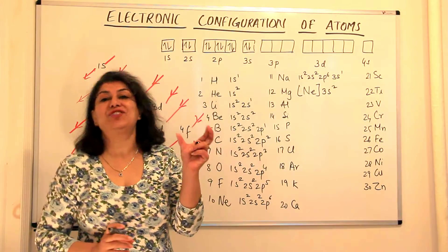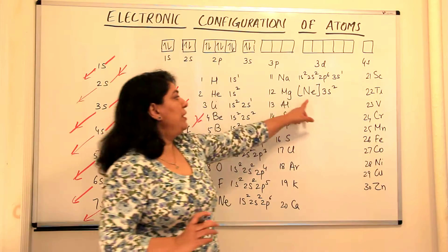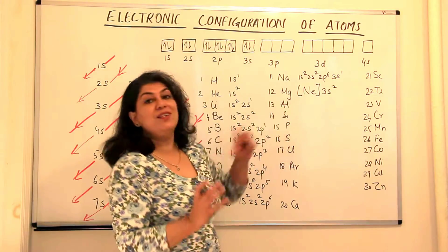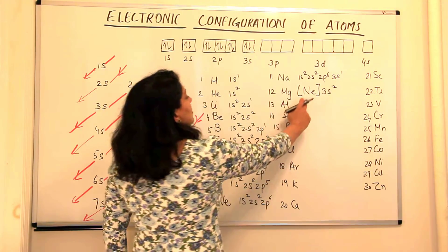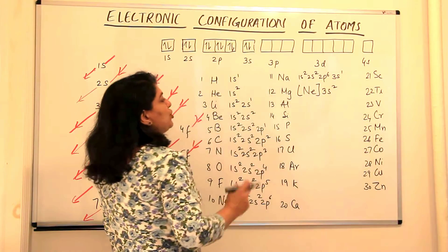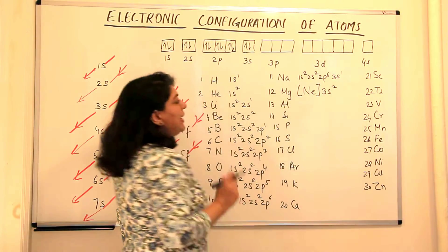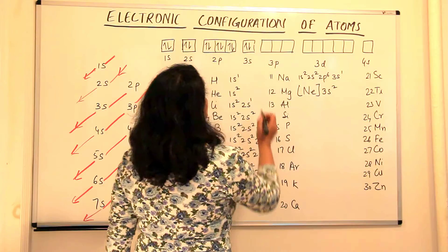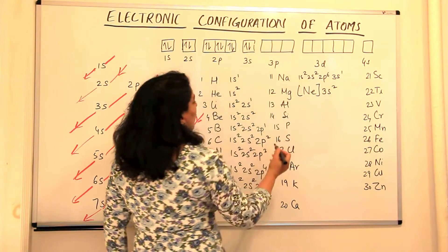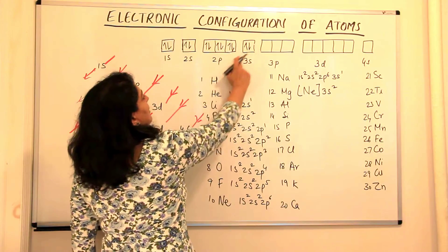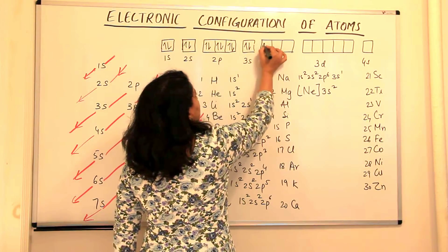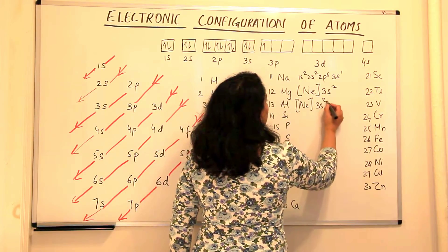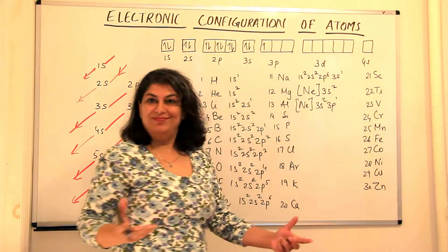You can write the detailed configuration, but this shortcut is useful. After magnesium with 12 electrons, the next element is aluminum with atomic number 13. Ten electrons are covered by the neon core, plus 2 in 3s, so the 13th electron goes to 3p. Aluminum's configuration is [Ne] 3s2, 3p1.